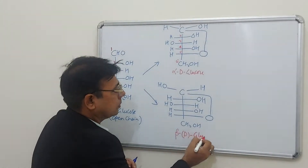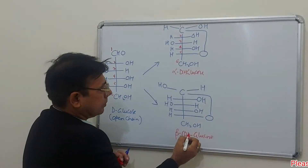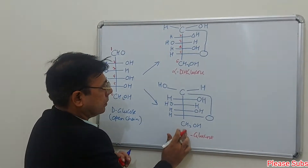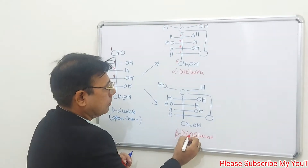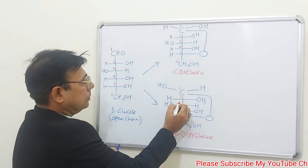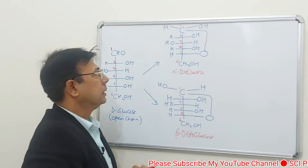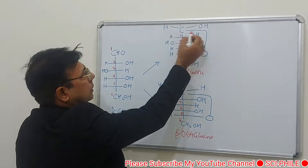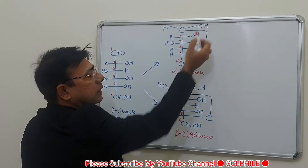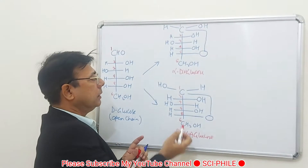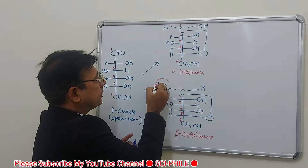This is beta D-glucose, also written as beta D-plus glucose, with carbons numbered 1, 2, 3, 4, 5, and 6. In the alpha form, H is on the left side and OH is on the right side on carbon 1, whereas in the beta form, H is on the right side on carbon 1 and OH is on the left side.